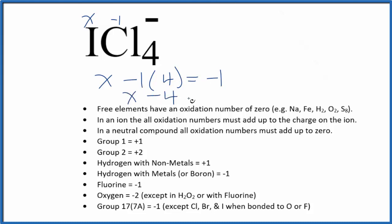So X minus four equals minus one. We add four to both sides, and X will equal positive three. So the oxidation state on the iodine in ICl4 minus is plus three.